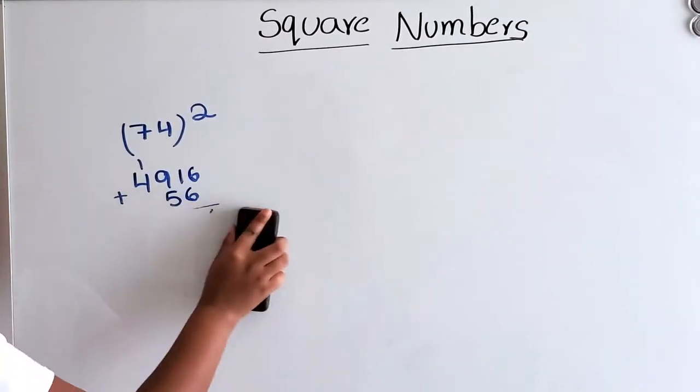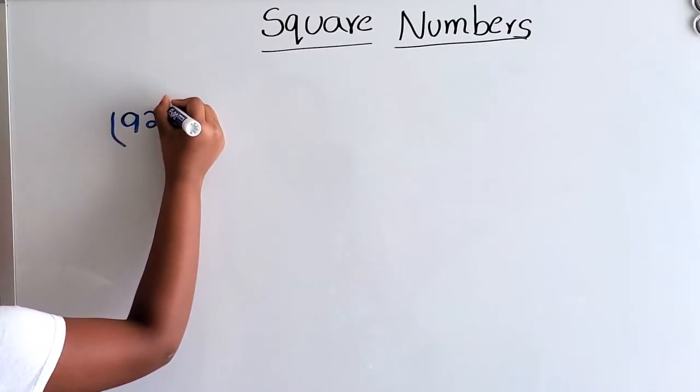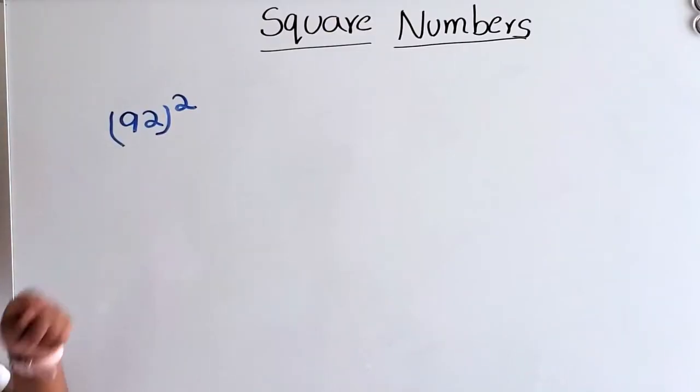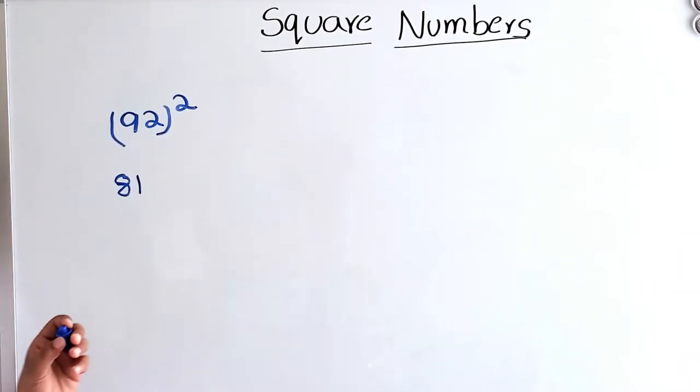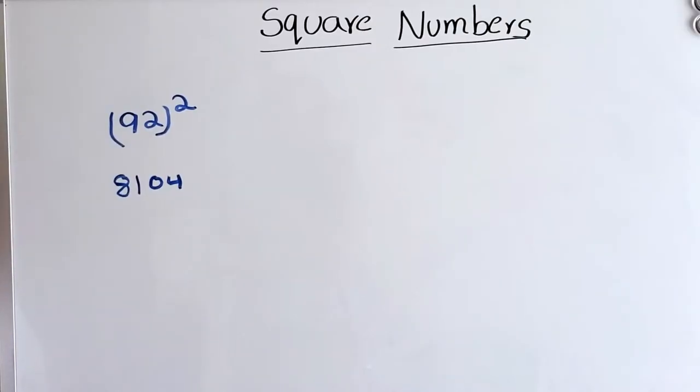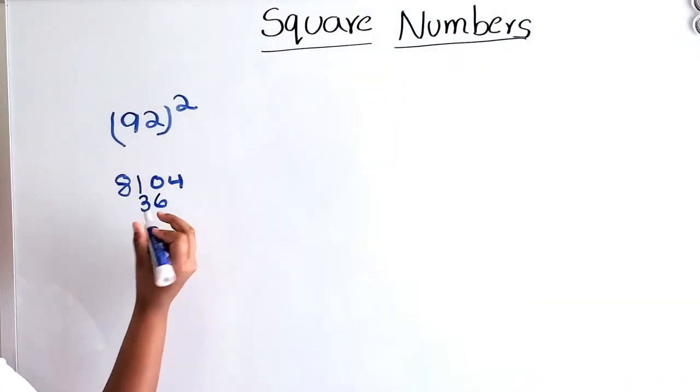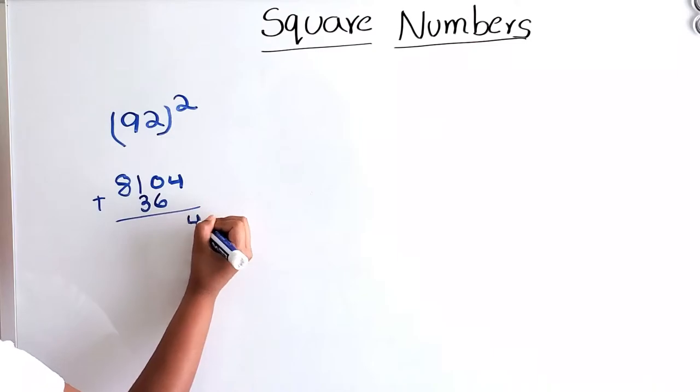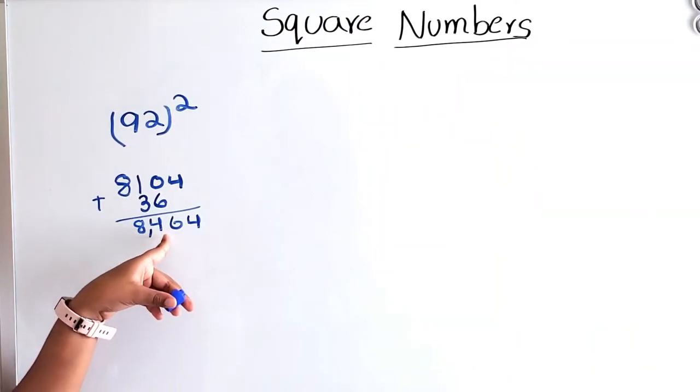Let's take another example: 92 square. 9 squared is 81, and 2 squared is 4. There always has to be 4 digits, so we'll have to put a 0. So, 04. Now, 9 times 2 equals 18. 18 times 2 is 36. Skip the first digit and line it between the middle digits. Now, add 4, 6, 4, and 8. So our answer is 8,464.